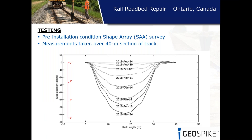This section of track had been monitored for some time. Prior to installation of the GeoSpike system, shape array monitoring had been done to get pre-installation conditions on how much deflection this section of track had achieved. With displacement on the y-axis in millimeters and rail length along the x-axis, from August 2018 when the section was re-ballasted and realigned until March 2019 when the final shape array survey was taken, this section experienced an additional 70 millimeters — almost three inches — of cumulative deflection due to continued traffic.